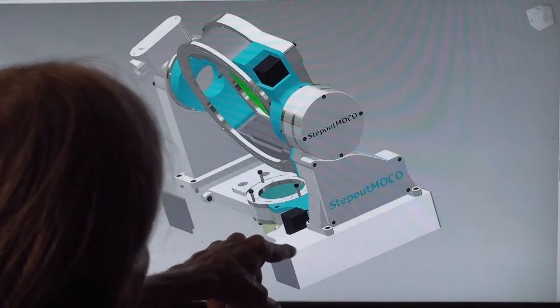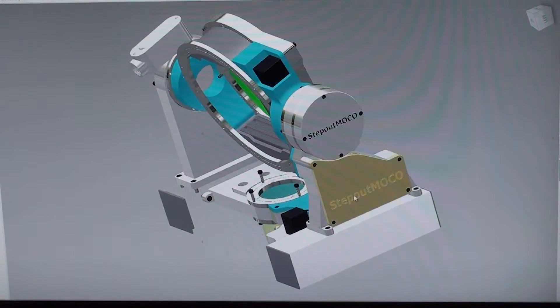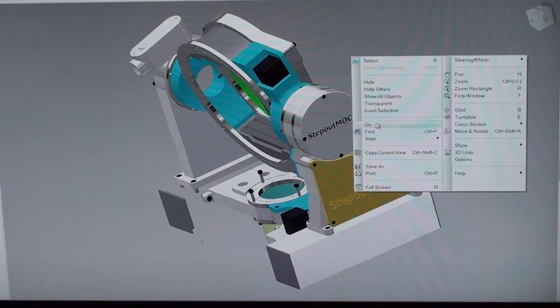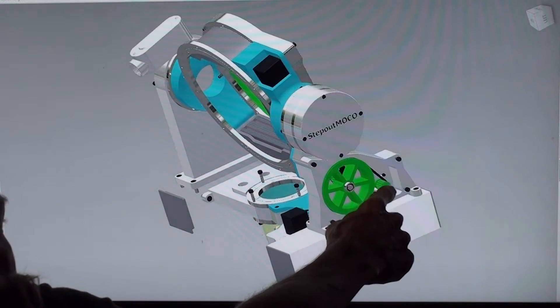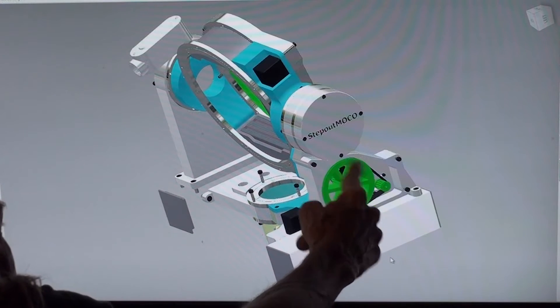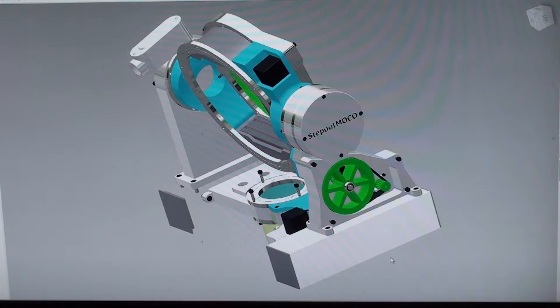Stepper motors run it and the drive is a two-stage belt drive. This is the first stage here. Motor pulley gives some reduction there.